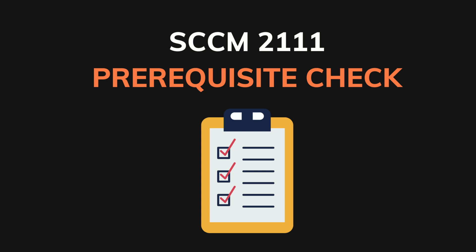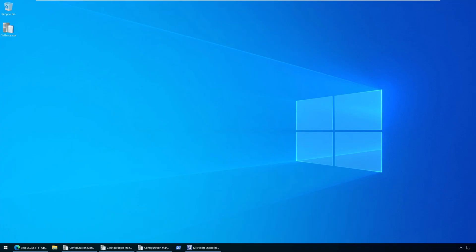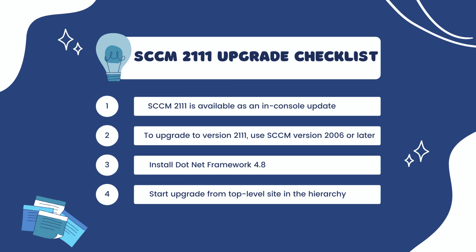SACM 2111 Upgrade Pre-Requisites and Upgrade Checklist. Before you install SACM 2111 update, ensure you are aware of the following pre-requisites. Number 1, Configuration Manager version 2111 is available as an in-console update; the update should be available under Updates and Servicing Node of the Configuration Manager console. Number 2, to upgrade to version 2111, ensure you are running SACM version 2006 or later. Number 3, the Configuration Manager 2111 upgrade requires at least .NET version 4.6.2, but Microsoft recommends using the latest version, which is 4.8. With .NET version 4.6.2 installed, you will get a warning during the pre-requisite check to upgrade to .NET 4.8. To get rid of this warning, you can download and install .NET Framework 4.8 from Microsoft.